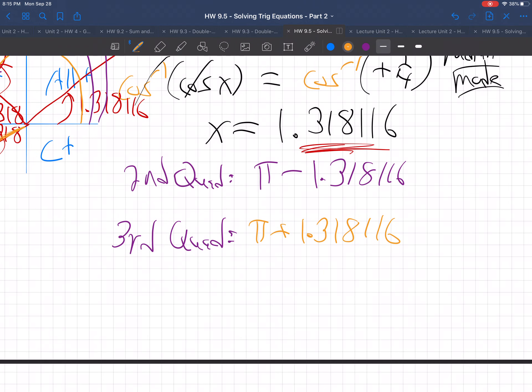And so, if we get those two answers then on our calculator. So, I'm going to use the pi button. So, pi minus that number we had. And I'm getting 1.82347. And then when I go pi plus it. I'm going to add pi to it. And I get 4.4597, 4.459708. Good enough.